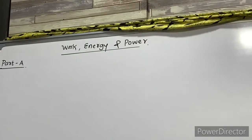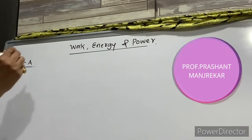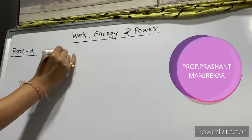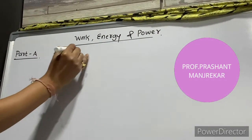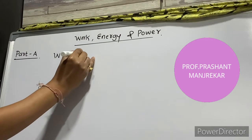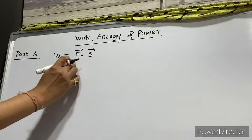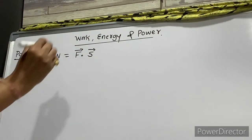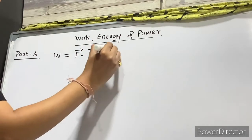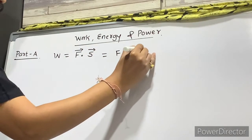This is Prashant. Today I am going to start with Work, Energy and Power, Part A. Work is a dot product of two vector quantities — one is force and the second is displacement. This is written as F·S·cosθ.